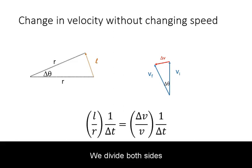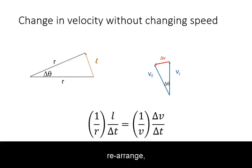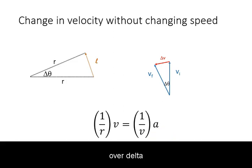We divide both sides by the time interval, rearrange, and then realize that L over delta-T is just the velocity, and delta-V over delta-T is the acceleration.